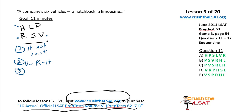Rule three: either P and V on consecutive days, or P and S on consecutive days, but not both. So we write PV or PS as adjacent blocks. We don't know which is to the left or right. P we've now talked about in a rule, S and V we've now talked about twice, so we'll probably be combining those rules in some way.